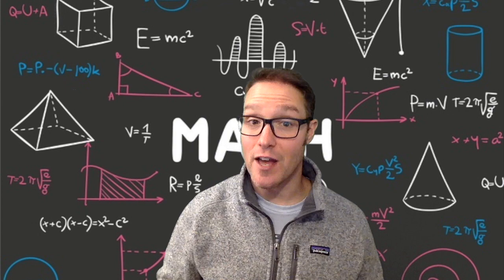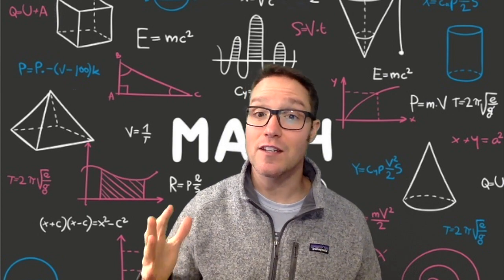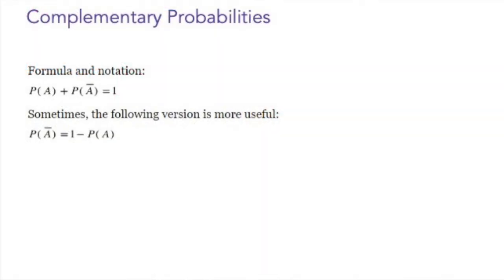The complement of an event is the probability that the event does not occur. Complementary probabilities add to one, or 100%. The formula for complementary probabilities is the probability of A plus the probability of not A, which is denoted by a horizontal line above the event, equals one. So the probability of an event plus its complement adds up to one.